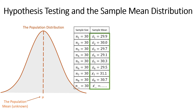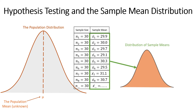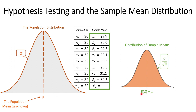We could take those individual sample mean values and create a new distribution called the distribution of sample means. This would be a normally distributed distribution that reflects all of the possible sample mean values that might be captured when we randomly sample from our original population. The expected value of this distribution — the mean value — is equal to the population mean.